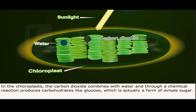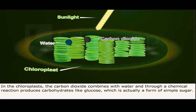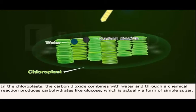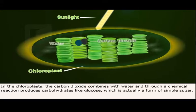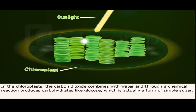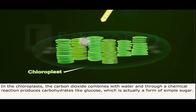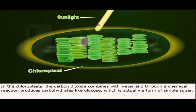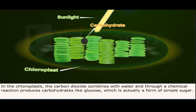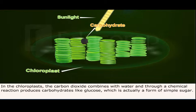In the chloroplasts, the carbon dioxide combines with water and through a chemical reaction produces carbohydrates like glucose, which is actually a form of simple sugar.